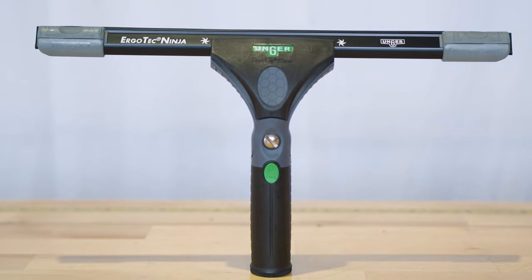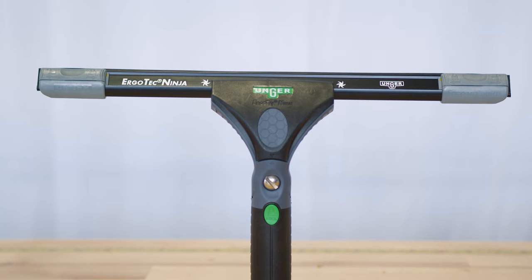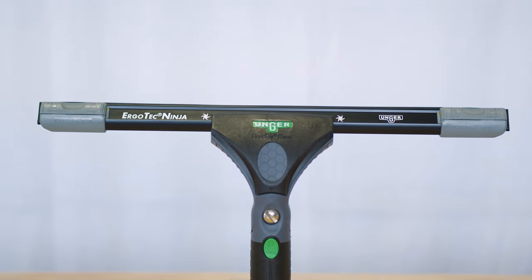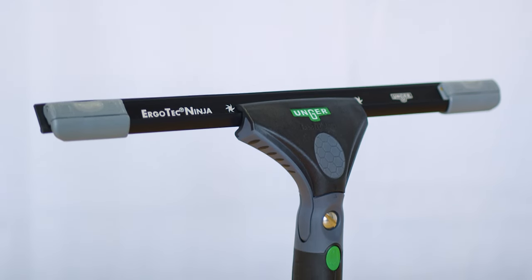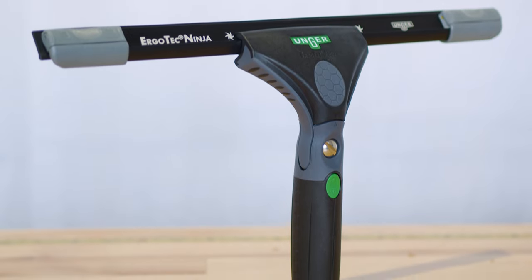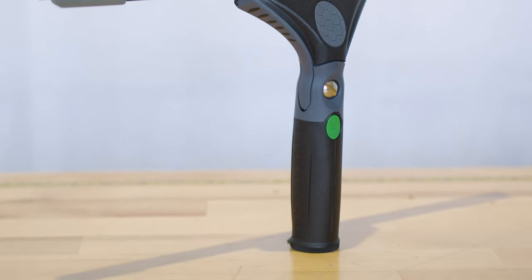On the other side, the Unger Complete Ergo Tech 40 Degree Ninja Squeegee stands out with its ergonomic design. It features the 40-degree Unger Ergo Tech Ninja Squeegee handle, specifically crafted for comfort and precision,